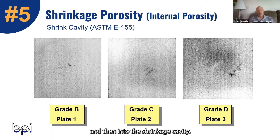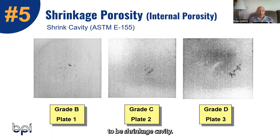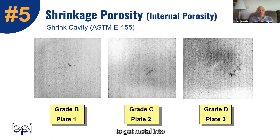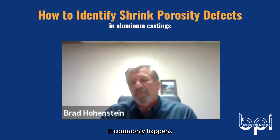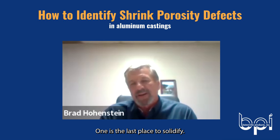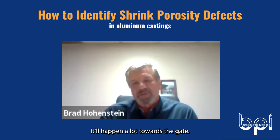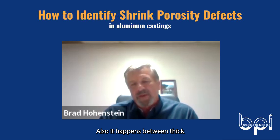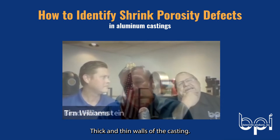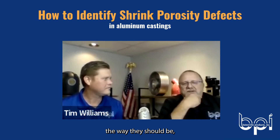It's a progression of shrinkage defects: elongated is the least severe, then sponge shrinkage, then shrinkage cavity. With a shrinkage cavity, you've actually failed to get metal into a portion of the part and it's an isolated cavity. This commonly happens at the last place to solidify, towards the gate, and also between thick and thin walls of the casting.